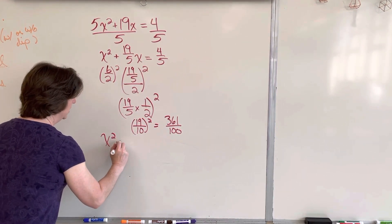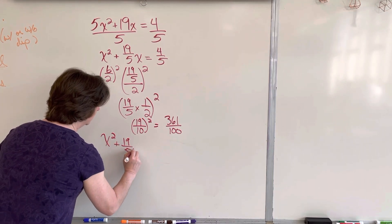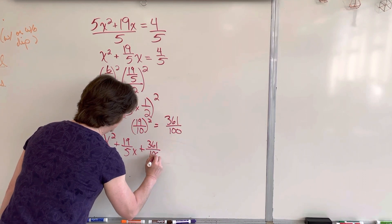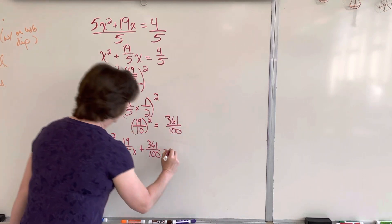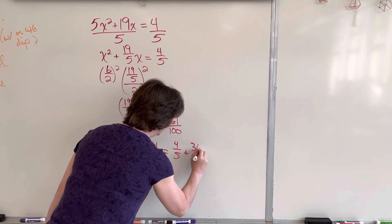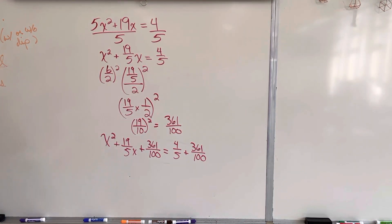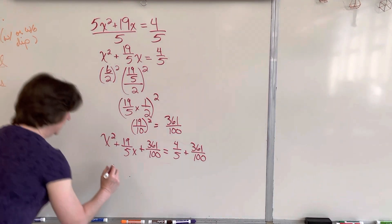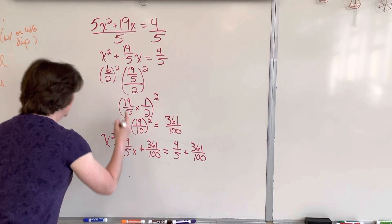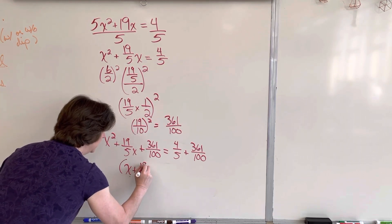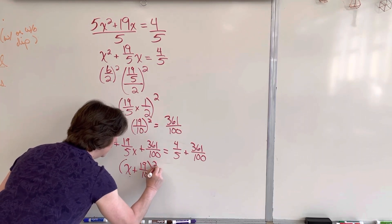x squared plus 19 over 5x plus 361 over 100 equals 4 fifths plus 361 over 100. The good part about this is, we already know this is x plus 19 over 10 squared equals.